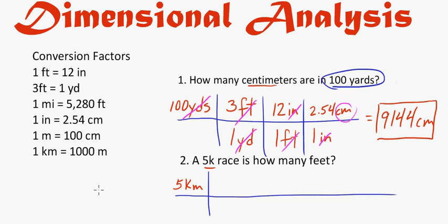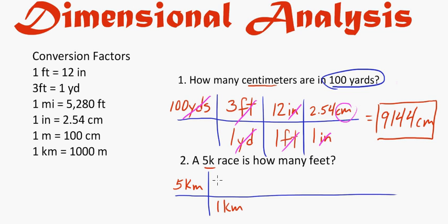How can I go from kilometers to feet? I can go from kilometers to meters, then meters to centimeters, centimeters to inches, and then inches to feet. If this were the only information you had, you'd need to rely on the table and do multiple steps. So I have 5 kilometers and I'm going to first change it to meters. I'll put 1 kilometer on the bottom to cancel kilometers and 1,000 meters on top. That cancels out the kilometers.